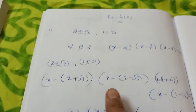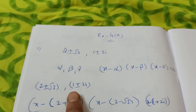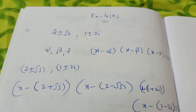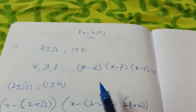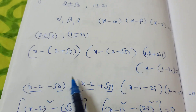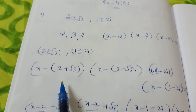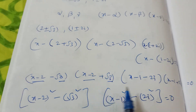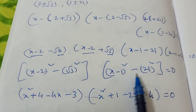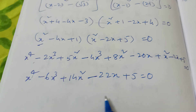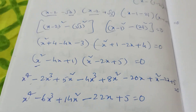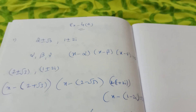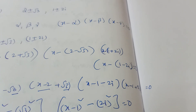Understood? That's how you form a polynomial equation from given roots. This type of question also appears in EAMCET and TS SET exams. The key step is splitting conjugate pairs using a² − b² formula — then just multiply. Thank you for watching my channel. Bye, take care.